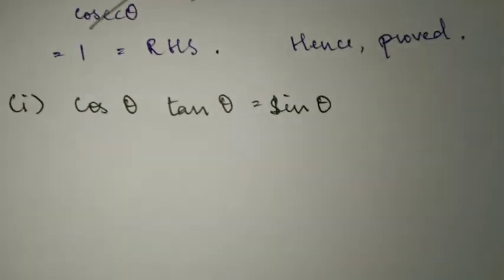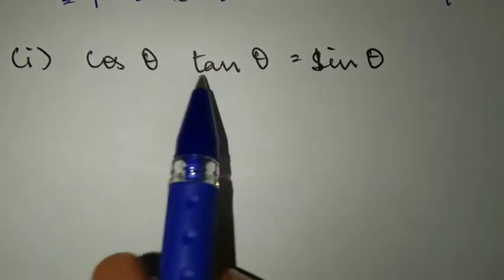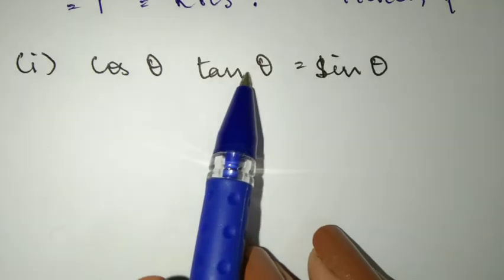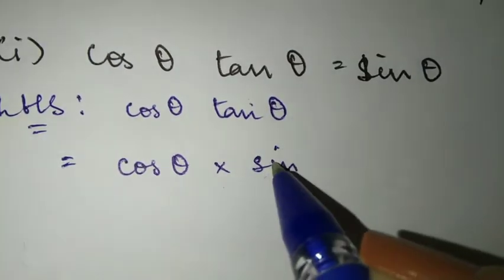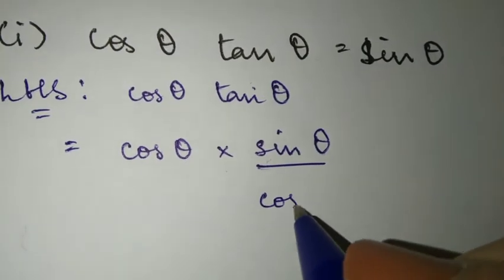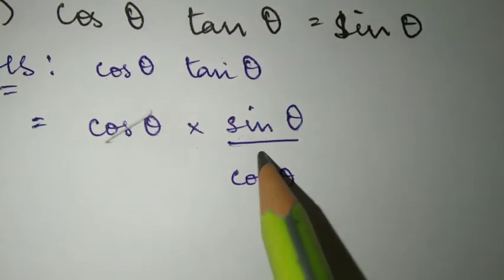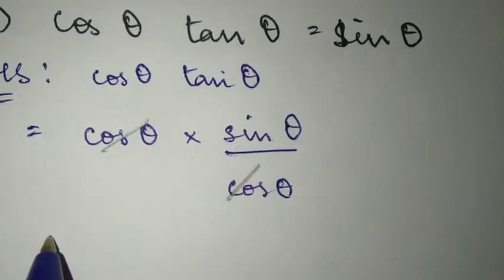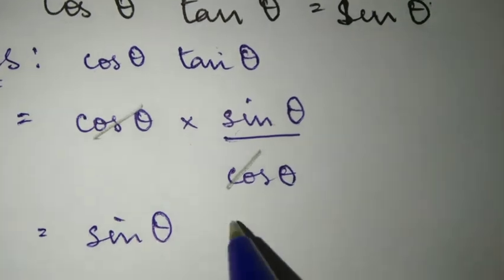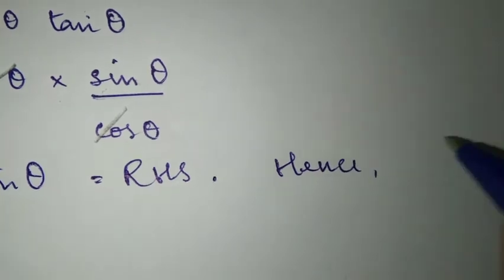Now moving on to Example 2, Question Number 1. Over here, LHS equals RHS. We work with sin theta on both sides — taking sin theta through several steps — okay?